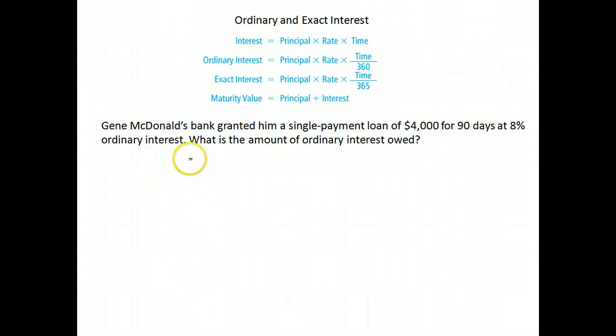Okay, let's look at ordinary and exact interest. The difference between, well, when we find interest, let's start there. We take the principal, which is the original amount, times the rate, the interest rate, times the amount of time in the account.